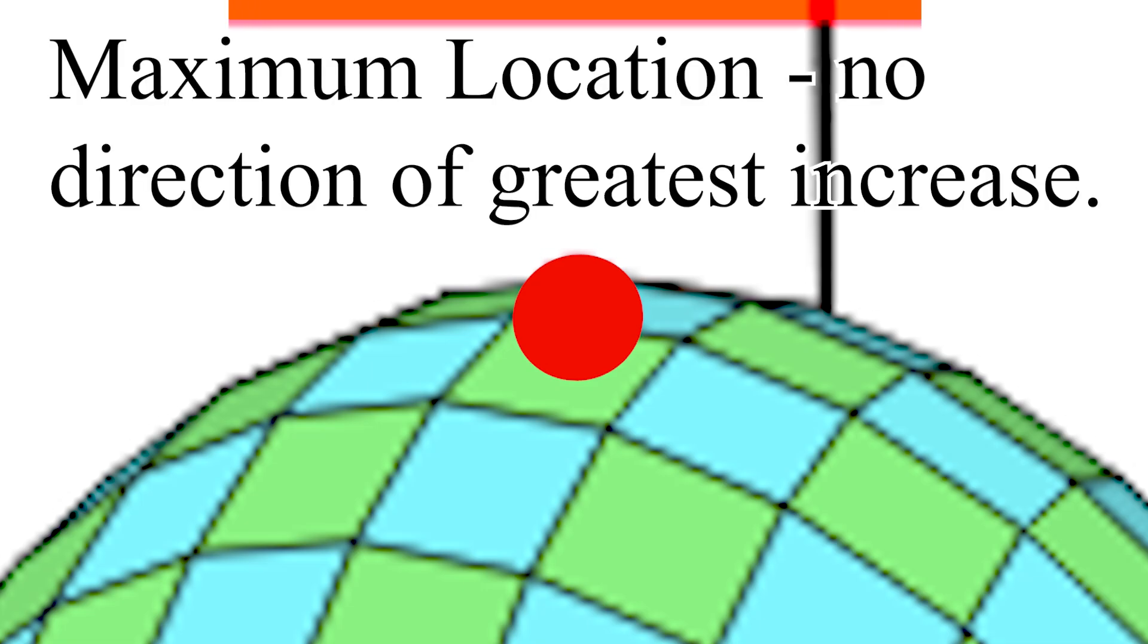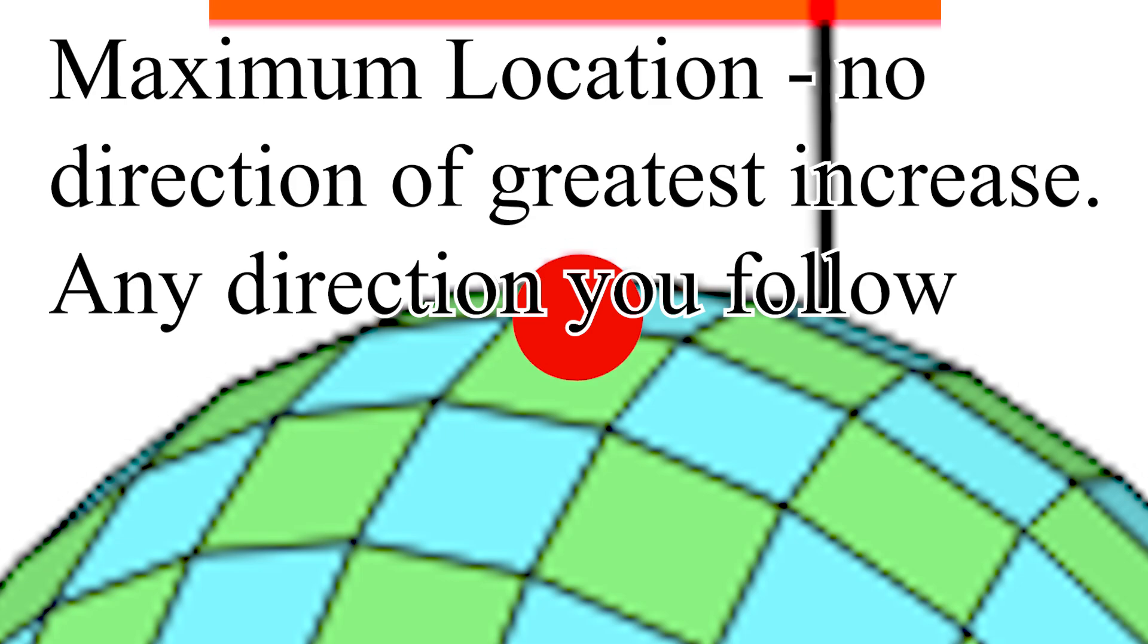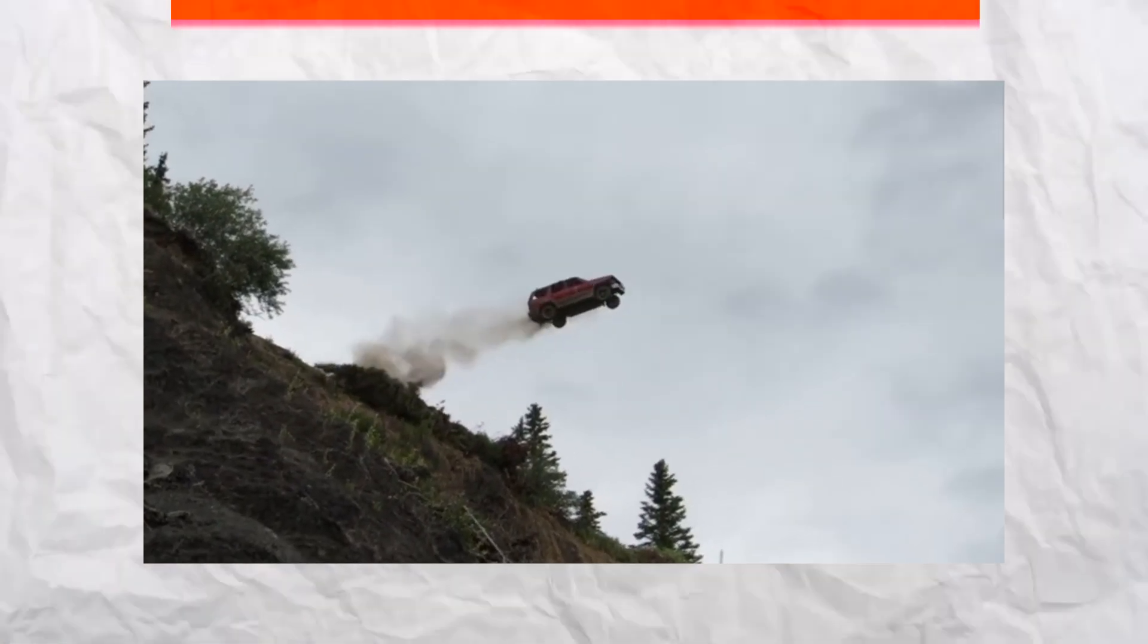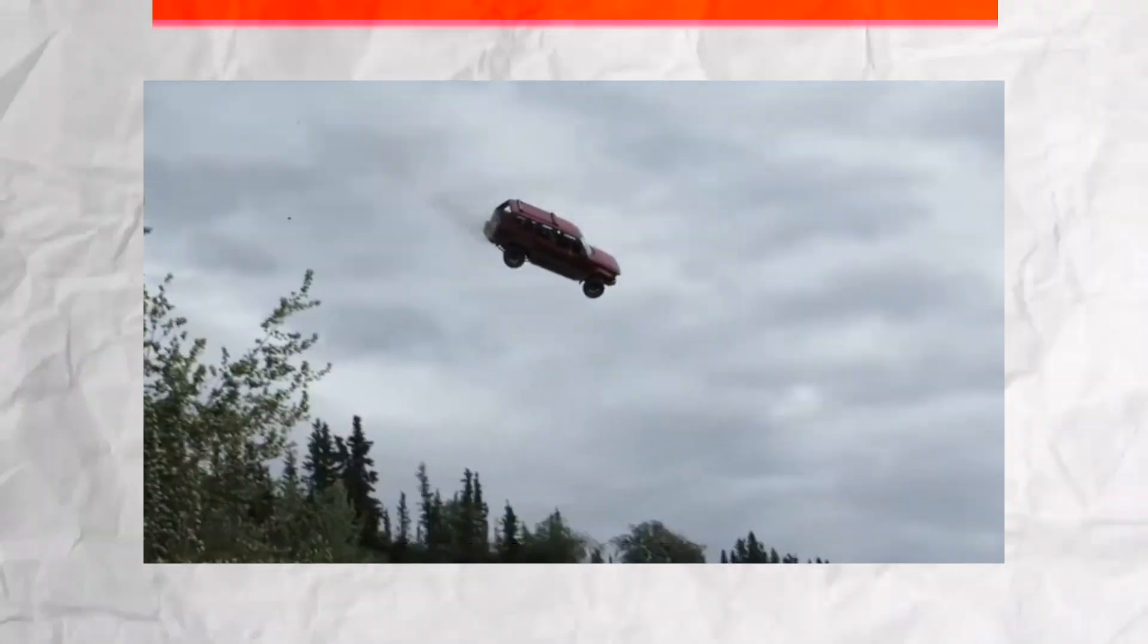And the zero gradient can be thought of as the maximum location. There is no direction of greatest increase. Any direction you follow will lead to a decrease in your position. It's like being at the top of a mountain. Any direction you move is downhill.